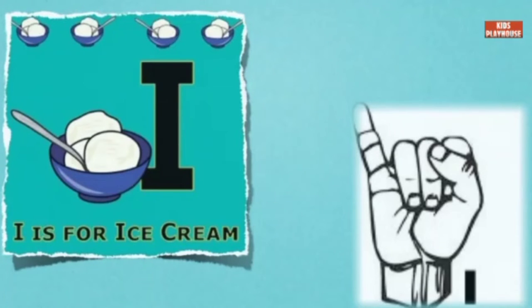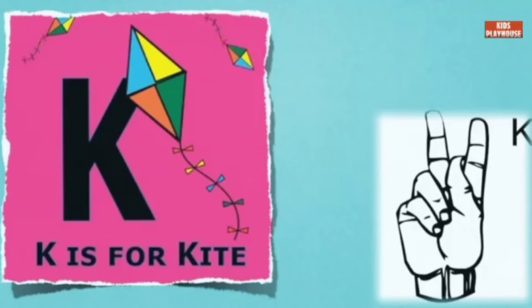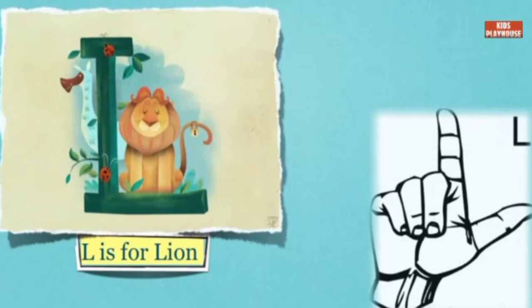I is for Ice Cream. J is for Jet. K is for Kite. L is for Lion.